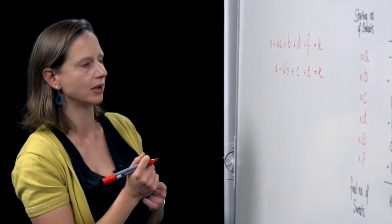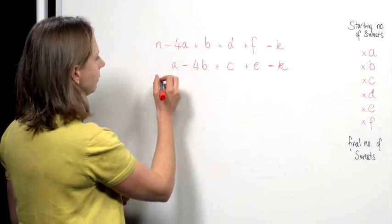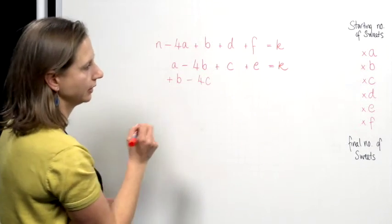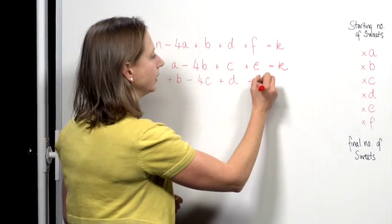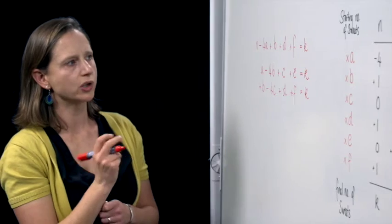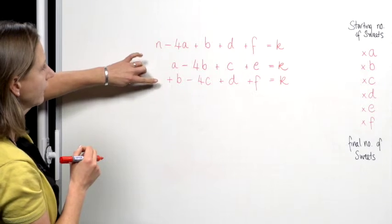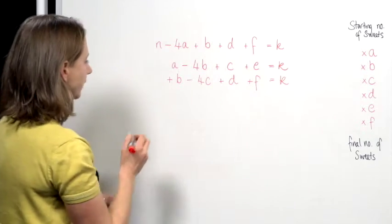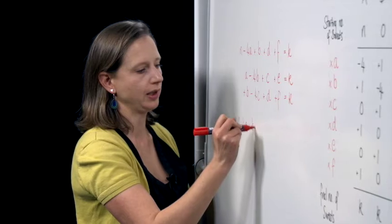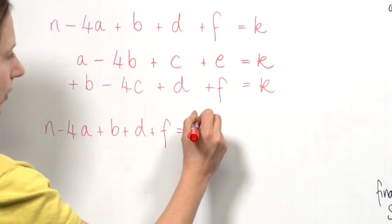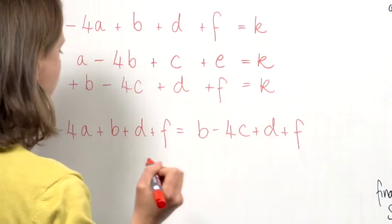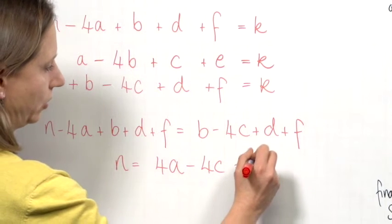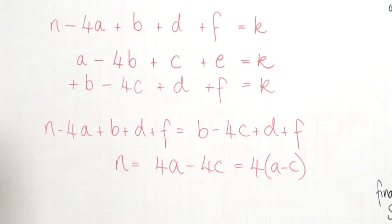I've got two equations, but I can't see quite yet how I'm going to use these. I'm going to carry on and look at child C. Again, starts with nothing, gains B, loses four C, gains D, and gains F, and finishes with K. This is more interesting now, because this equation here and this equation here have a lot of similarities. We've got the B, the D, and the F in both. N minus 4A plus B plus D plus F is equal to B minus 4C plus D plus F, and that gives us that N is equal to 4A minus 4C, or just 4 lots of A minus C, and we see that our value of N has to be divisible by 4.